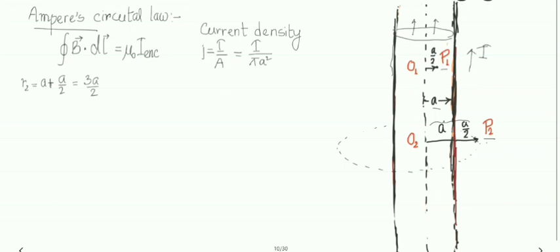If B2 is the magnetic field at point P2, then by Ampere's circuital law: the closed integral of B2·dl2 = μ₀ times I_enclosed. The Amperian loop is circular and encloses the entire wire, so I_enclosed is simply the total current I. For a small elemental length dl2, by the right-hand thumb rule, the magnetic field is tangential to the loop at every point.